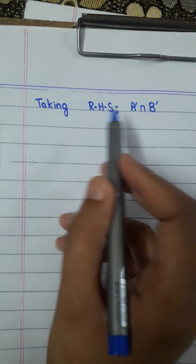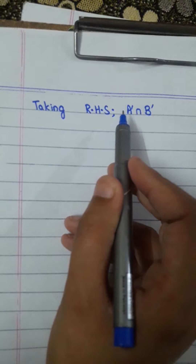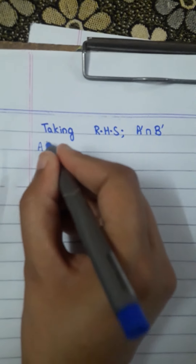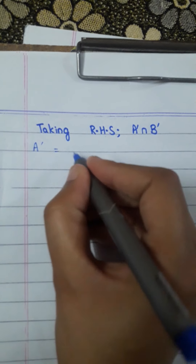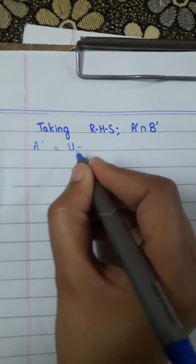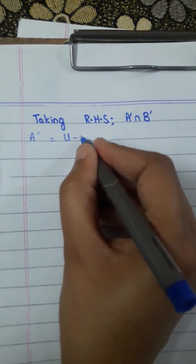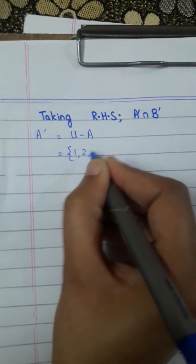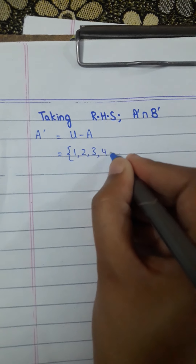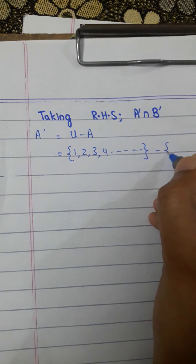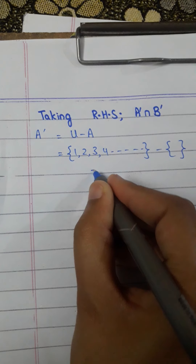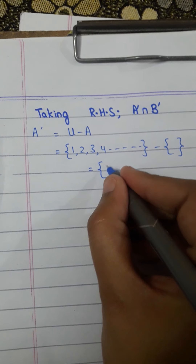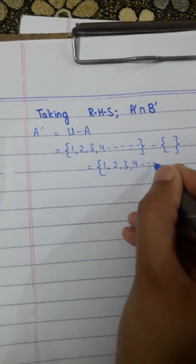Now taking the right-hand side: A'∩B'. The complement of any set equals U minus that set. For A complement: put the value of U, which is {1, 2, 3, 4, ...}, minus A, which is the empty set. The answer becomes all members of U: {1, 2, 3, 4, ...} and so on.